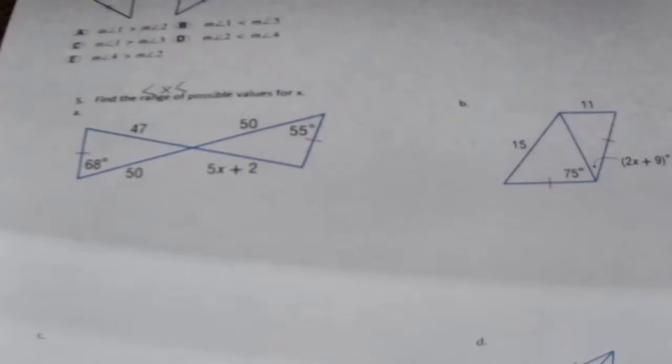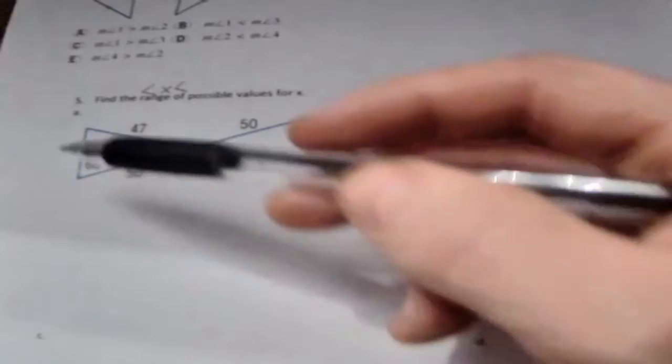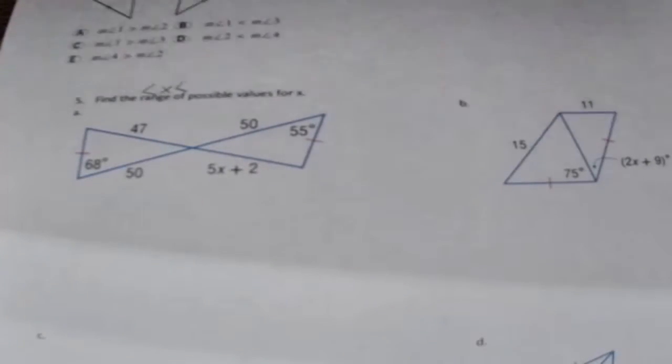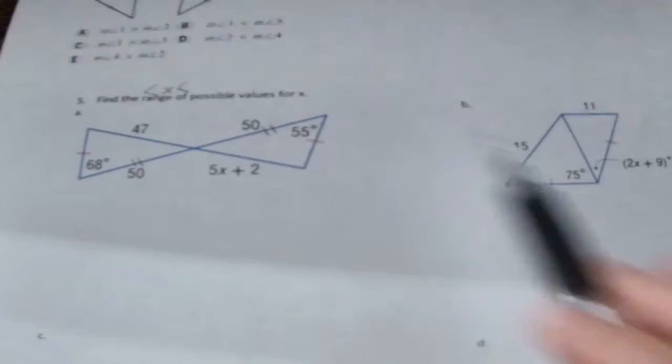So we are going to be using Hinge Theorem. Now when we do this, to use Hinge Theorem you have to have two sides congruent. I've already been told this side and this side are congruent. Now based on the numbers, I can also know that this side is congruent because they both have 50 for a side length.